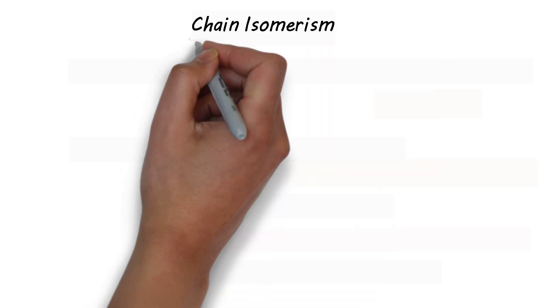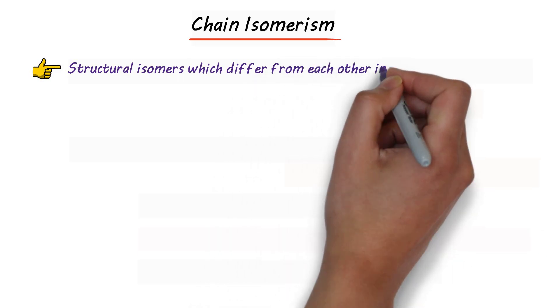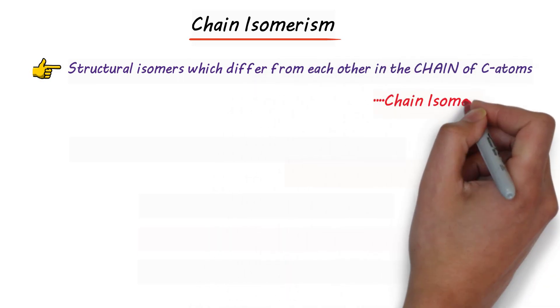Let's talk about chain isomerism. Structural isomers which differ from each other in the chain of carbon atoms are called chain isomers.